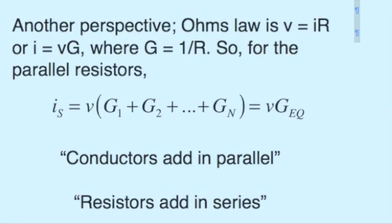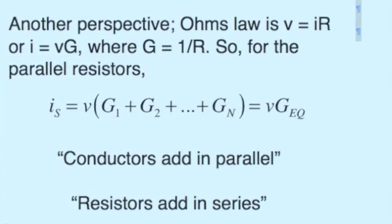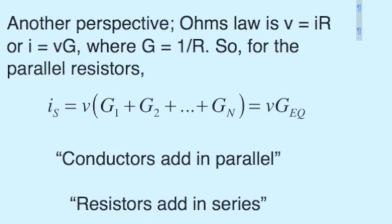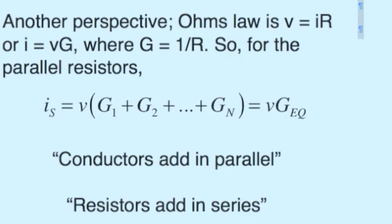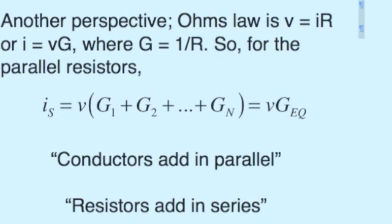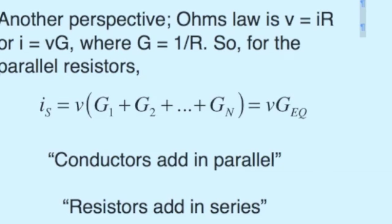Here's another way to look at that situation. Ohm's law can also be written as I is equal to V times G, where G is the conductance. So, KCL Is equals I1 plus I2 is Is equals Vg1 plus Vg2, etc. Or, just V times G equivalent, where G equivalent is the sum of the conductances.